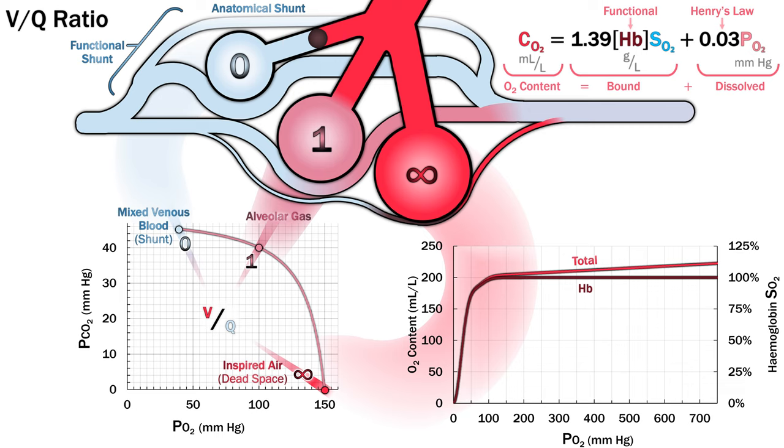Hb is functional hemoglobin content in grams per liter. SO2 is the oxyhemoglobin saturation as a decimal. And the final term is PO2, the partial pressure of dissolved oxygen with the Henry's Law constant, which is a minor contributor to oxygen content.